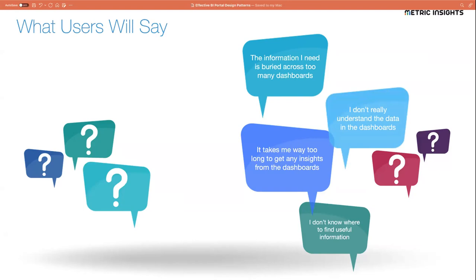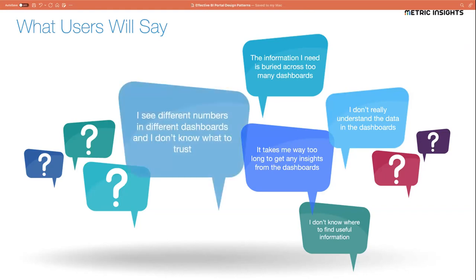A very common complaint is: I just don't really understand the data in the dashboard. I see this says sales, but how is sales defined here? Is it the same way it's defined in these other dashboards? Does this use the newer definition our business group just agreed on last month, or is this based on some obsolete definition from three years ago? And if I'm seeing different numbers across different dashboards and presentations, how do I know which ones to trust — which is certified and trustworthy, and which is more suspect?